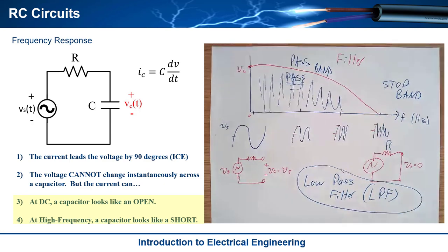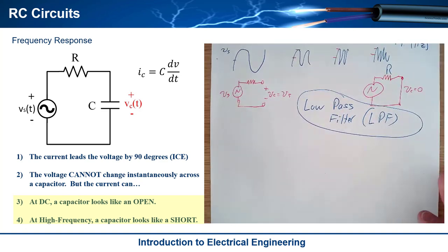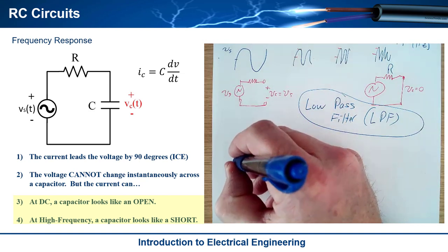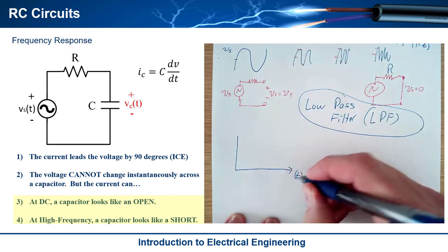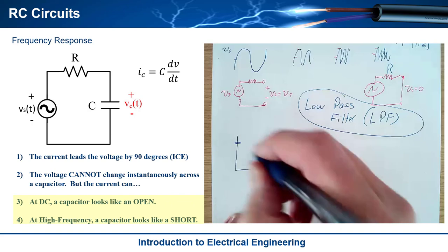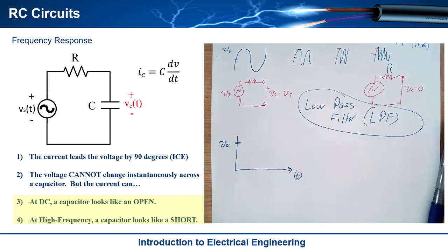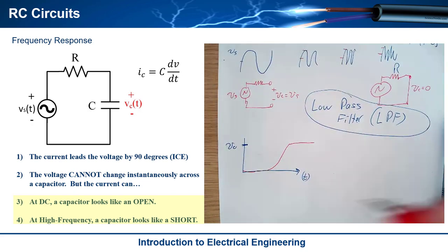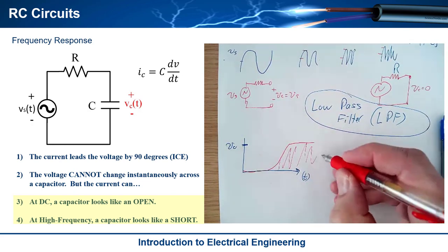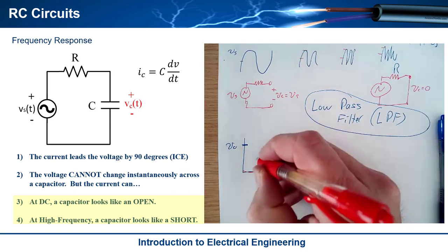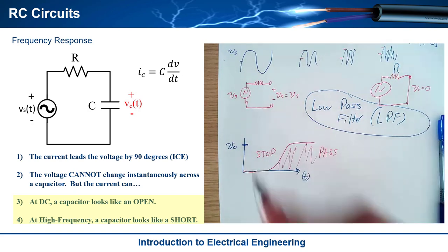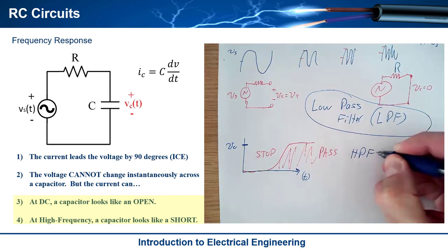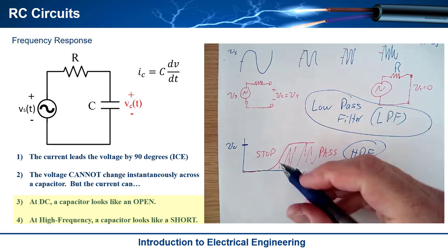There are other types of filters that exist, though we're studying capacitors right now. If I plotted a frequency response where what came out — V out — had a profile where nothing was passing and then all of a sudden stuff starts passing at high frequency, with nothing passing at low frequency, this type of response is what we call a high pass filter, because it passes high frequencies.